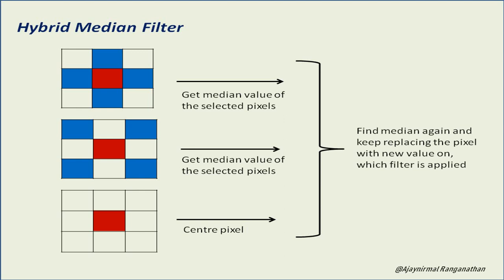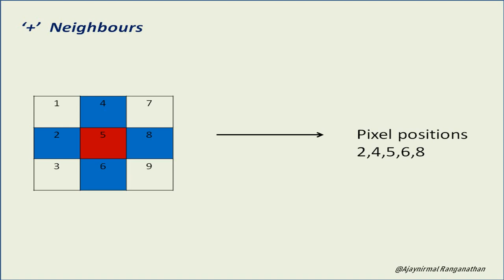Finally we get three values, and those three pixel values are again selected for further processing. We apply the median filter again to get the final pixel value, which replaces the original pixel. The plus neighbors are at specific positions in the 3x3 window.